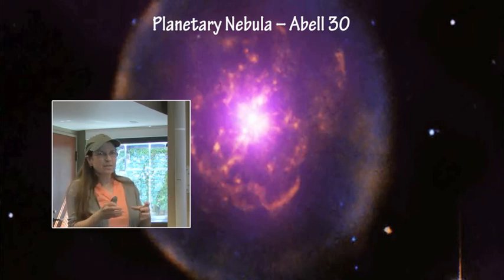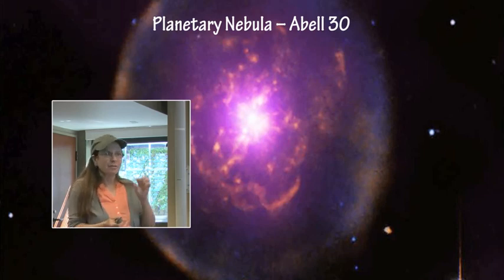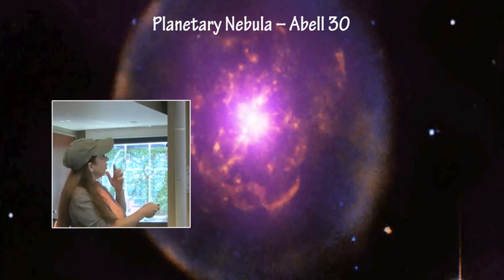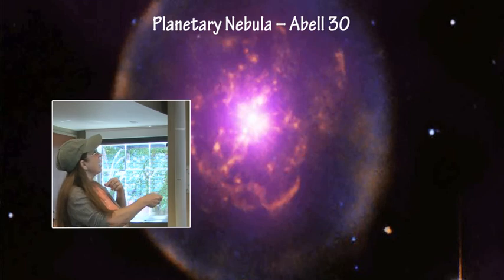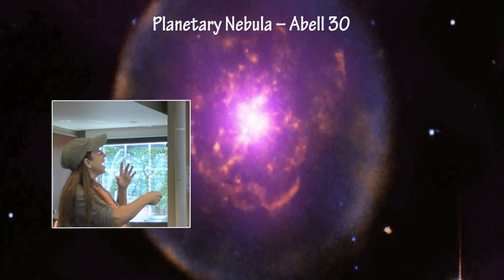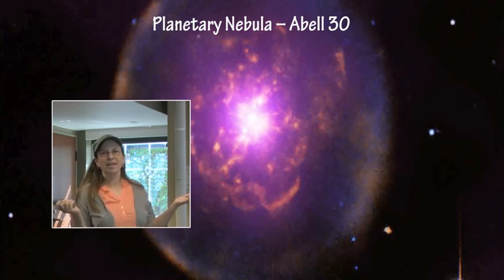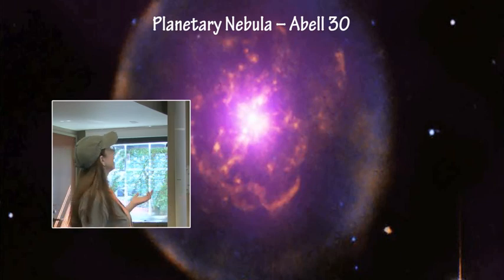It eventually collapsed and formed a planetary nebula with a white dwarf in the core. So what we actually have here is a planetary nebula within a planetary nebula. How cool is that? I love that.